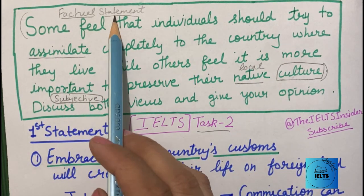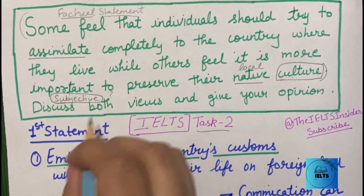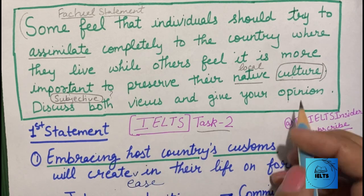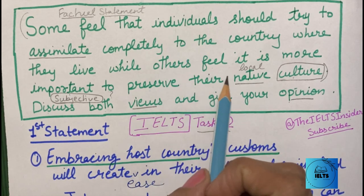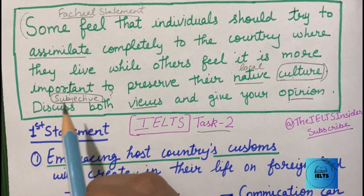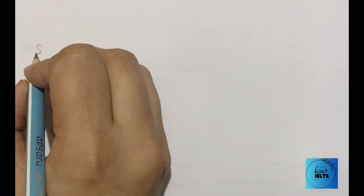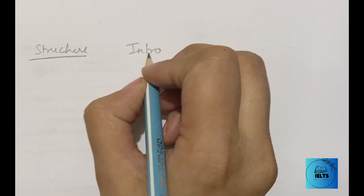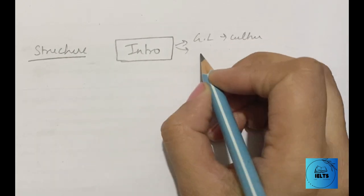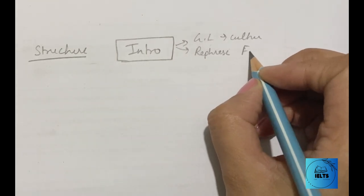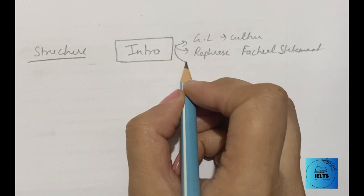Ab second part hai jise hum subjective statement kehte hain. Kisi bhi type ke question mein ek factual statement hoti hai jisse topic ka pata chalta hai — jaise yahan culture ka pata laga. Aur factual statement ki rephrasing karni hoti hai apne introduction mein. Subjective statement mein mujhe question poocha gaya hai — 'Discuss both views and give your opinion.' Toh introduction mein factual statement ki rephrasing karni hai.